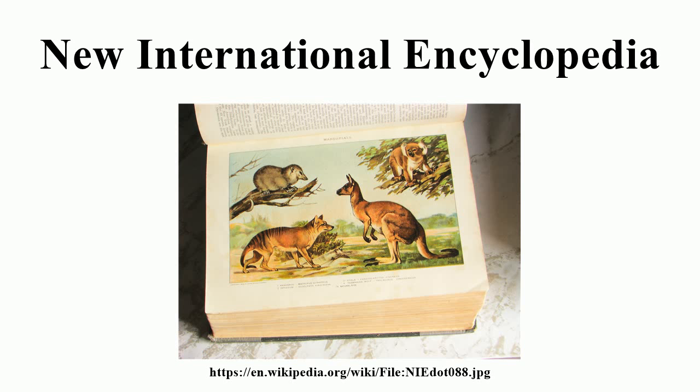A great deal of biographic material is recorded in the New International Encyclopedia. An early description of Adolf Hitler and his activities from 1920 to 1924 is in the supplement to the 1926 edition. Many of the names used to describe the scientific identities of plants and animals are now obsolete.